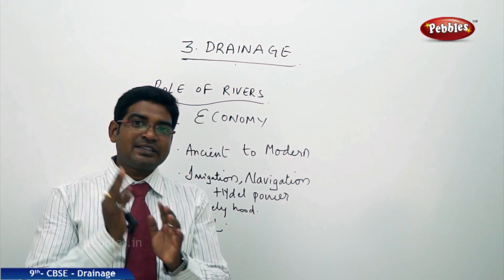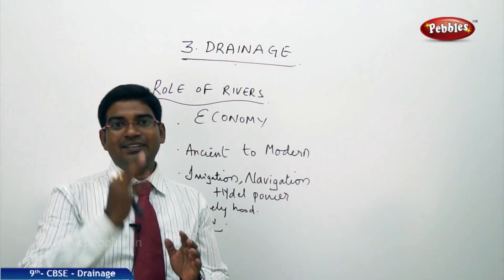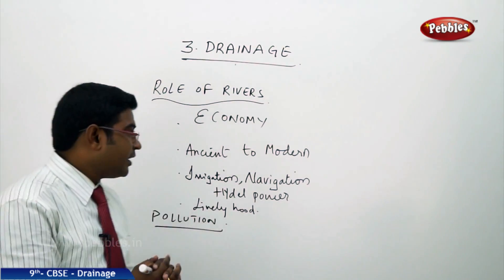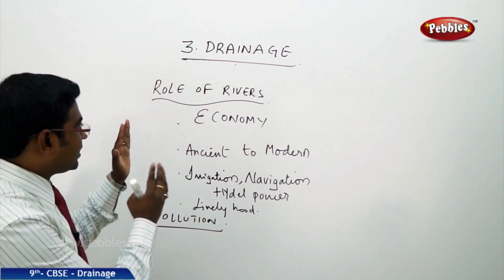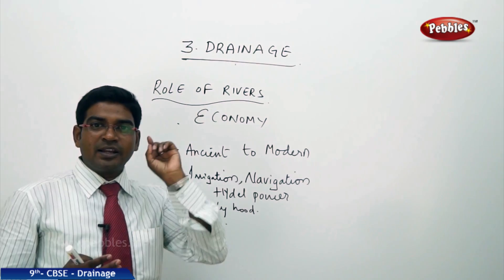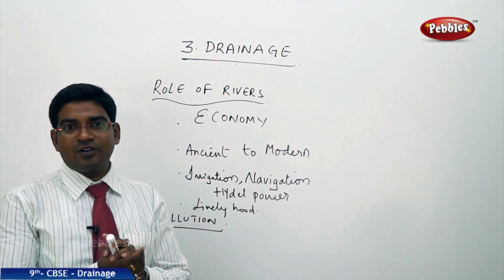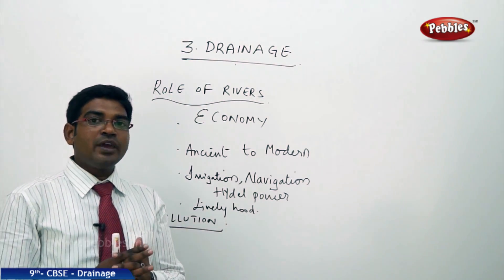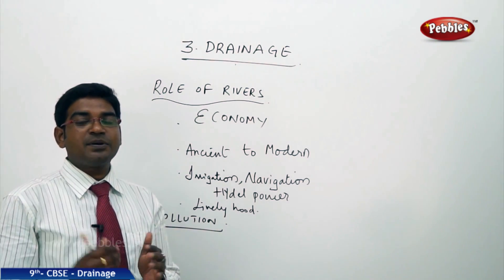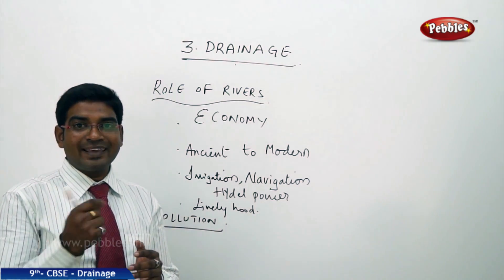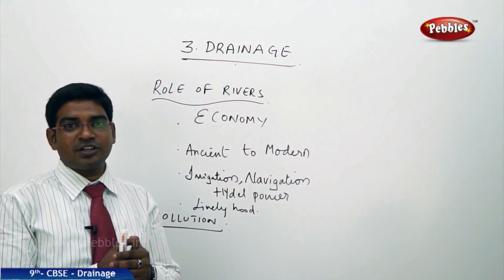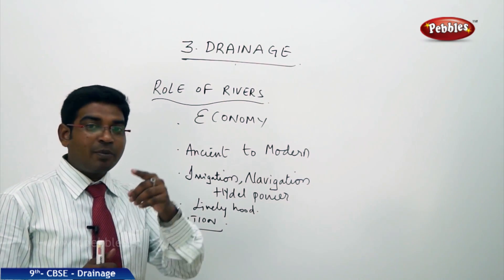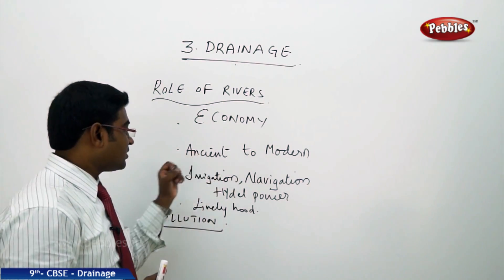Man's life started settling only at river places or at the banks of rivers. It is not that rivers do not contribute to the economy — rivers do contribute largely to the economy. A country like India, where largely 70% of the Indians depend directly on agriculture, the rivers supply water for agriculture through irrigation facilities.